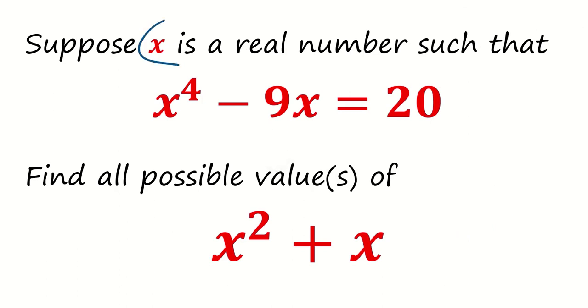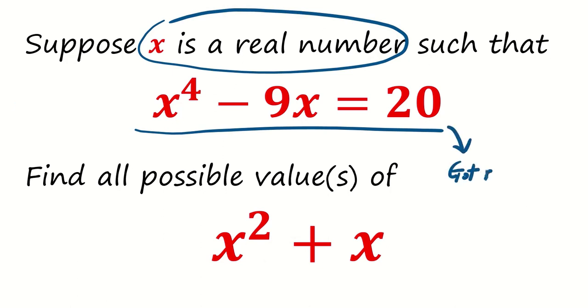Let's reconsider the question. Suppose x is a real number such that x^4 - 9x = 20. Is it possible that this equation does not have any real solution to begin with? Let me illustrate what I meant with an interesting example.